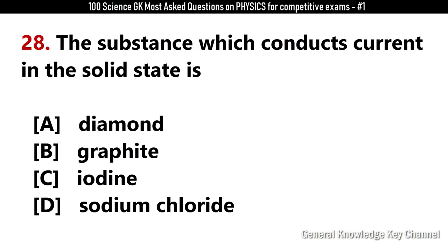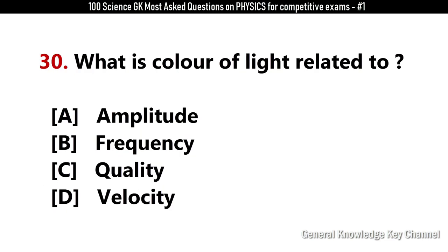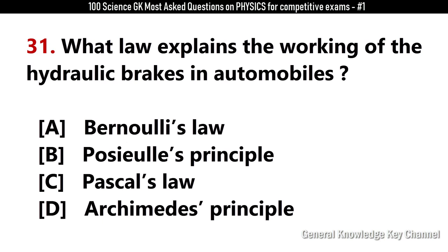The substance which conducts current in the solid state is? Answer B: Graphite. Which set of conditions represents the easiest way to liquefy a gas? Answer A: Low temperature and high pressure. What is the color of light related to? Answer A: Amplitude. What law explains the working of hydraulic brakes in automobiles? Answer C: Pascal's law.